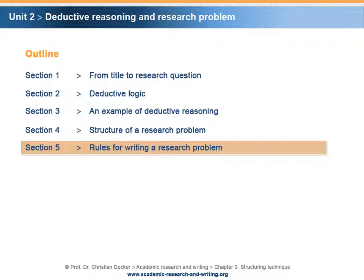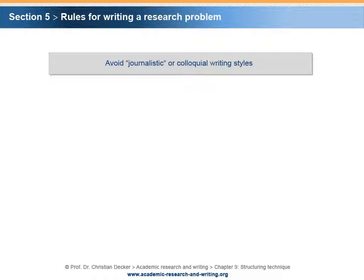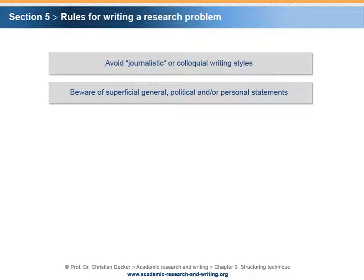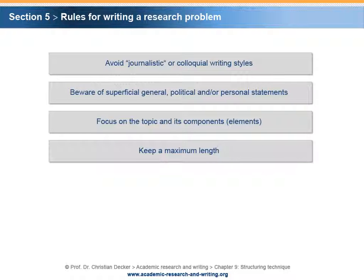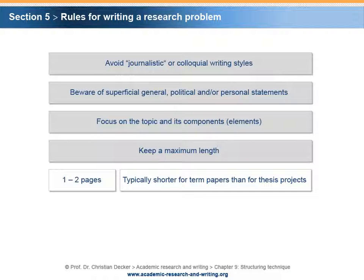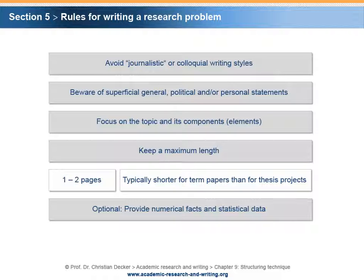Section 5 – Rules for writing a research problem. There are some rules of thumb that help you with writing a research problem. Avoid a journalistic or colloquial writing style. Beware of superficial, general, political, and/or personal statements. Focus on the topic and its components. A research problem should have a maximum length — one to two pages is a good benchmark. The subchapter Research Problem is typically shorter in term papers than in thesis projects. The relevance of the topic can optionally be stressed by providing numerical facts and statistical data.